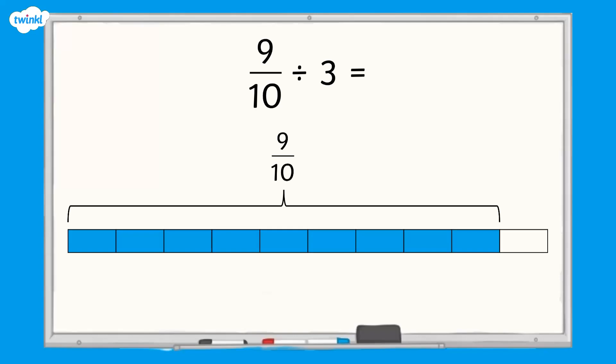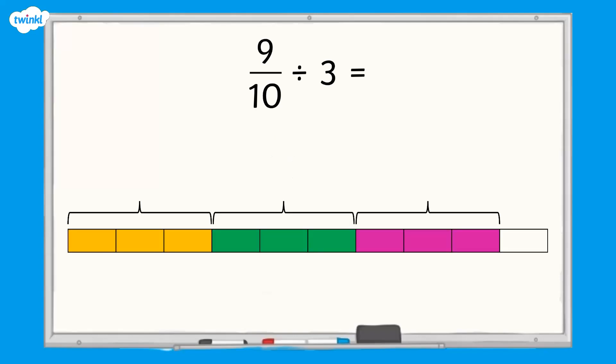To divide by 3, we need to split the 9 tenths into 3 equal groups. Each of the groups has 3 of the equal pieces in it, so each group is 3 tenths. 9 tenths divided by 3 equals 3 tenths.